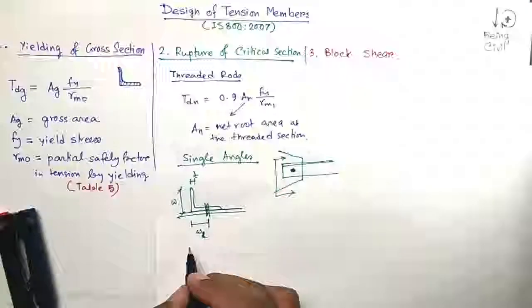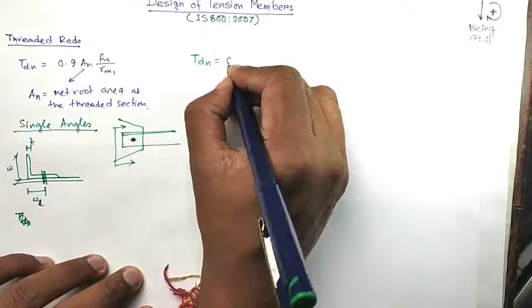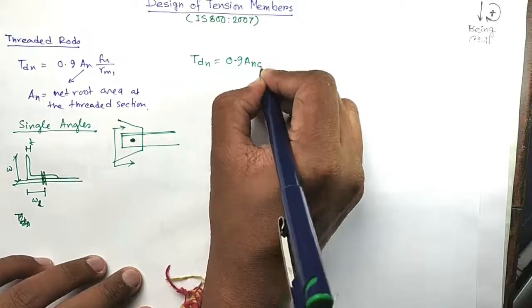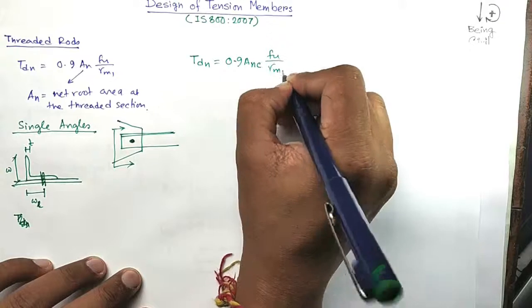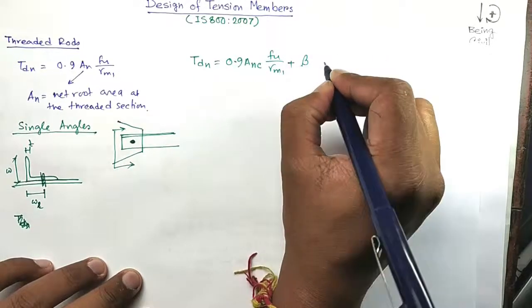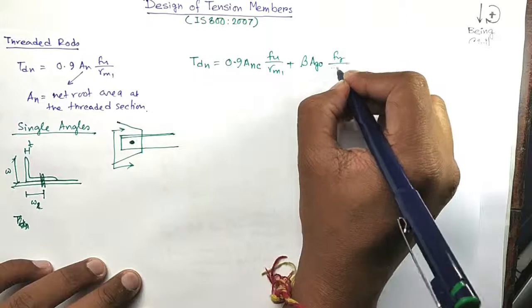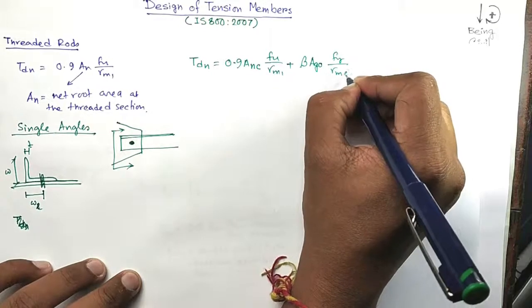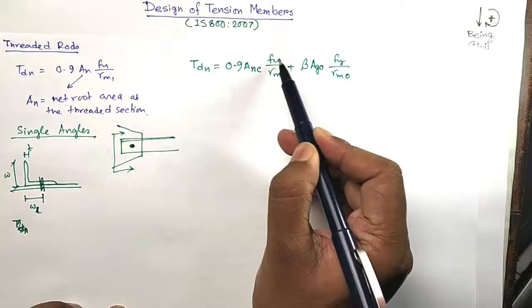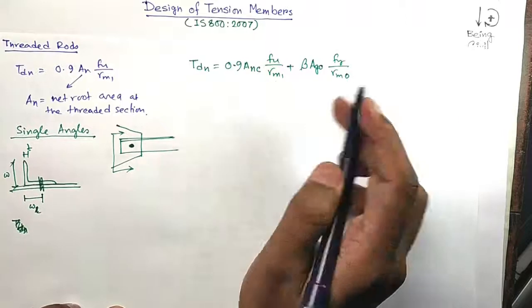Now to get the rupture strength of single angles, you have to use this formula: TDN = (0.9×ANC×FU / γM1) + (β×AGO×FY / γM0). You all know FU, FY, γM0, and M1.